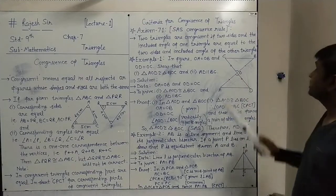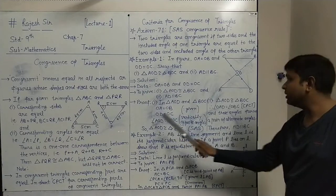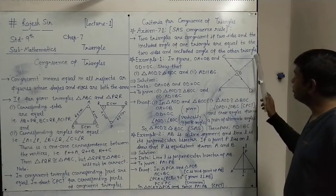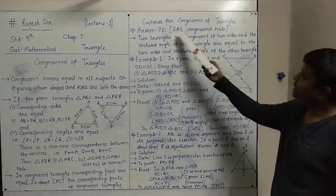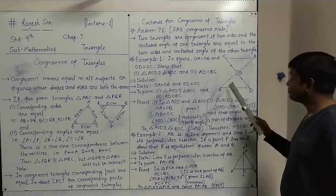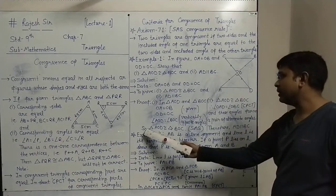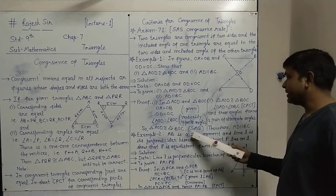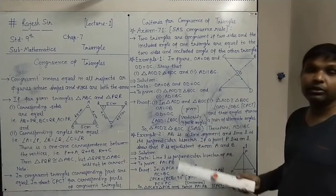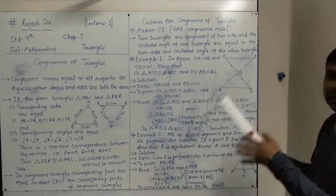So in triangle AOD, the two sides OA and OD and the included angle AOD are equal to the two sides OB and OC and the included angle BOC of triangle BOC. This satisfies the SAS condition. By the correspondence A↔B, D↔C, O↔O, we conclude: triangle AOD is congruent to triangle BOC by the SAS congruence rule, showing that two sides and the included angle of one triangle are equal to those of the other.